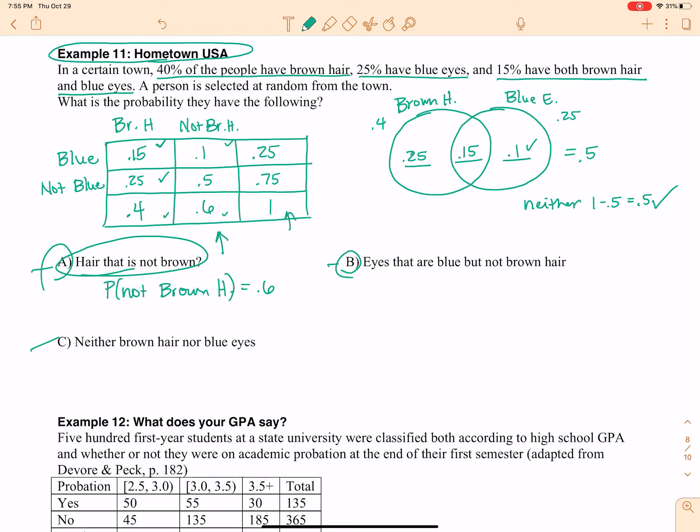All right, B, eyes that are blue but not brown hair. So I've got eyes that are blue but not brown hair. That is going to be these people right here. Pretty easy to read off of the Venn diagram. They have blue eyes, but see the part of the circle that I'm looking at? Only blue eyes. That means they don't have brown hair. So where would you find that in your table? Well, blue right here, not brown, right there, 0.1.